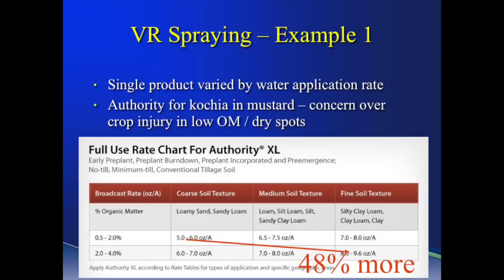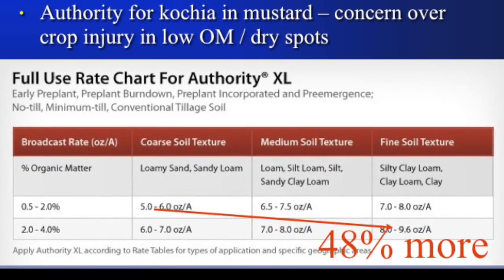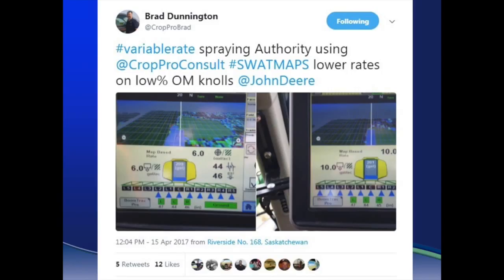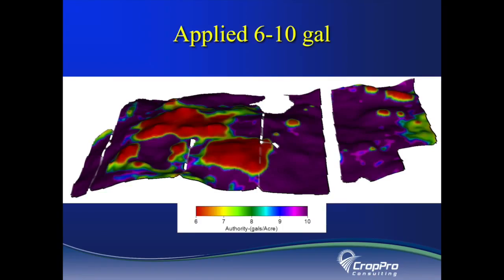The first example I'm going to discuss is the use of a product called Authority, commonly used for kochia. In this example it's with a mustard crop, and the producer was concerned over crop injury in low organic matter dry spots of the field. The Authority use rate chart is based on percent organic matter and soil texture, which we model very closely with our swap maps. So we built the producer a prescription to apply low rates on low organic matter dry areas, varying the water volume of his sprayer from 6 to as high as 10 gallons per acre across the field, to reduce potential for crop injury while still maintaining good kochia control in the areas more prone to high kochia populations.